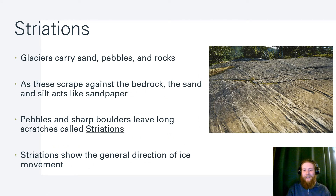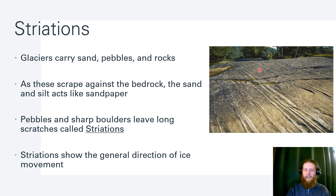Striations: as glaciers move, they carry sand, rocks, and pebbles. As these scrape along bedrock, they act like sandpaper and leave really long scratches called striations. Striations show us the general direction of ice movement — we can see which direction this glacier was moving and dragging things along.